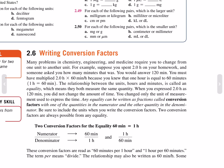One hour equals 60 minutes. The relationship between the units hours and minutes is called an equality, which means they both measure the same quantity. When you express 2.0 hours as 120 minutes, you did not change the amount of time — you only changed the measurement used to express the time. Any equality can be written as fractions called a conversion factor, with one quantity in the numerator and the other in the denominator. Be sure to include the units. Two conversion factors are always possible from any equality.